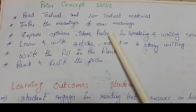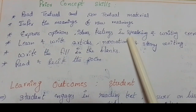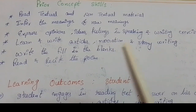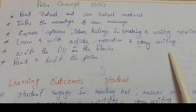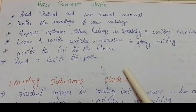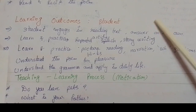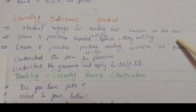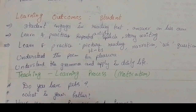Next, prior concepts and skills: students read textual and non-textual material, infer meanings of new words, express opinions, ideas and feelings in speaking and writing exercises, learn and write articles, narration, and story writing, write fill-in-the-blanks, and read and recite the poem. Learning outcomes: students engage in reading text, answer on their own, learn and practice article and story writing.